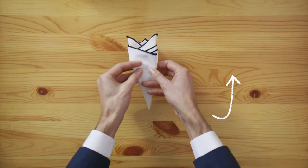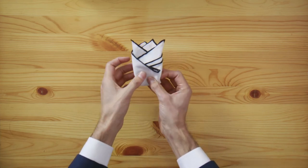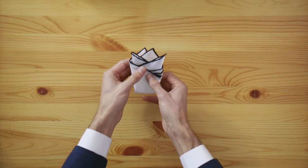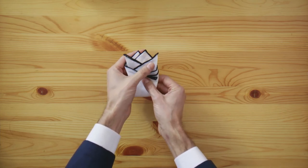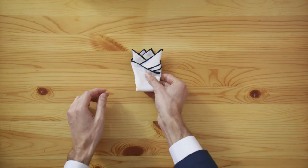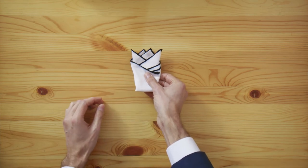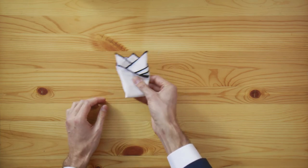Fold the bottom section up to the back. Adjust according to the length of your pocket. And finally, place it in your pocket.